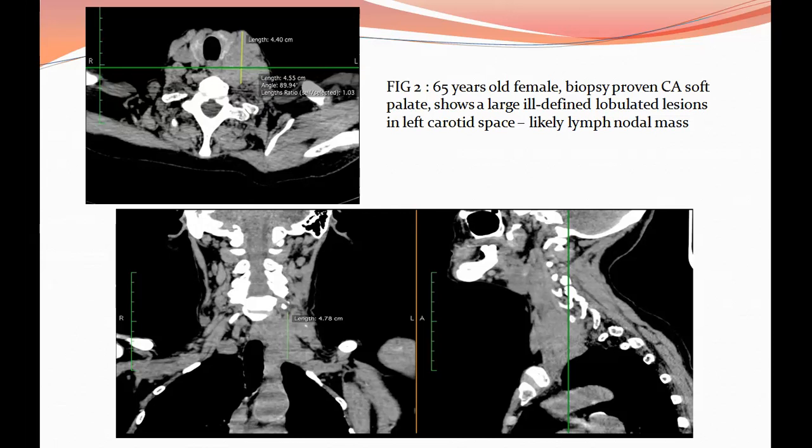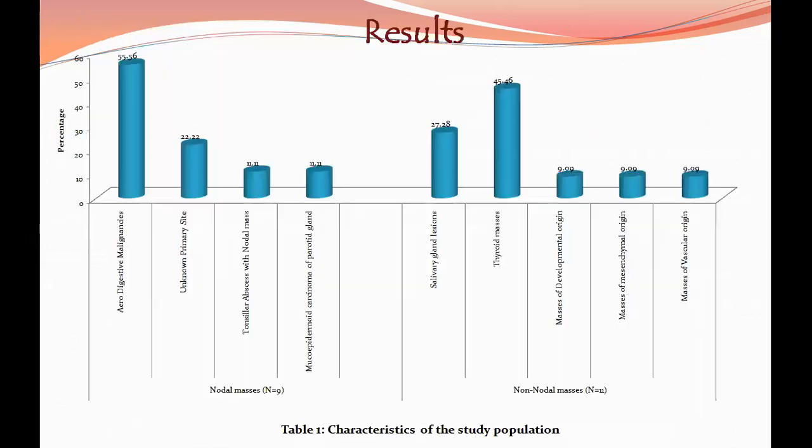Anteriorly, it is displacing the left lobe of the thyroid with partial loss of fat planes. There is also focal loss of fat planes with the esophagus. Anterolaterally, it is displacing the sternocleidomastoid muscle with loss of fat planes. Posteriorly, it is abutting the paravertebral muscles with loss of fat planes. On CT, the proper extent of the mass in relation to surrounding structures can be observed more clearly compared to ultrasonography.